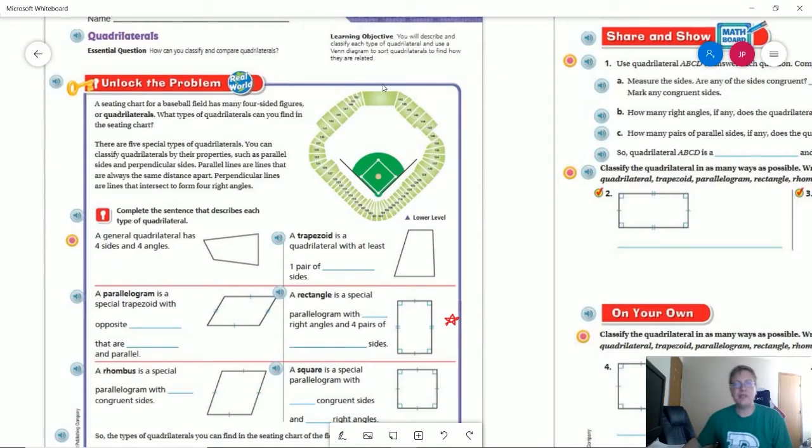To start off with they give us a picture of a baseball diamond and we're talking about the seating. So before we answer the question of what types of quadrilaterals we might have, let's talk about what they are.